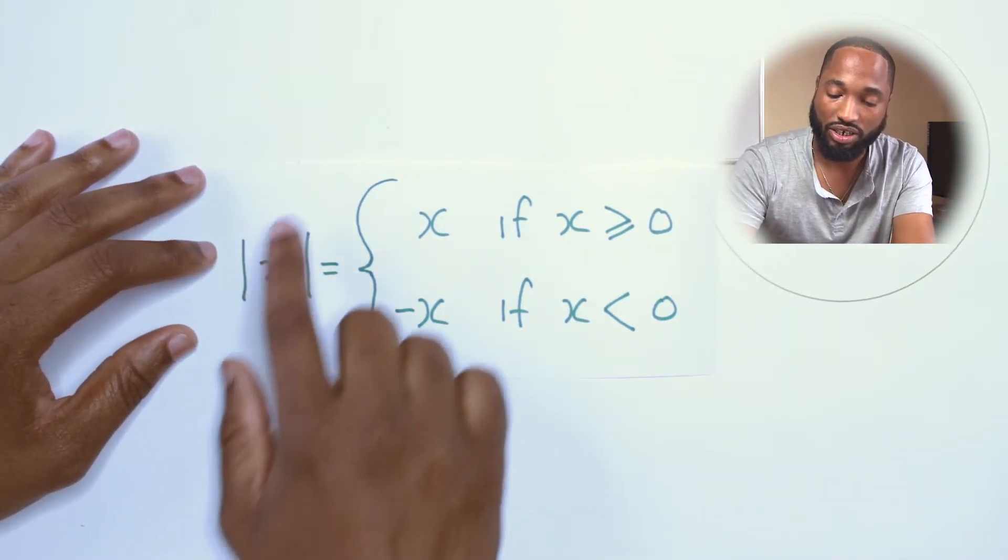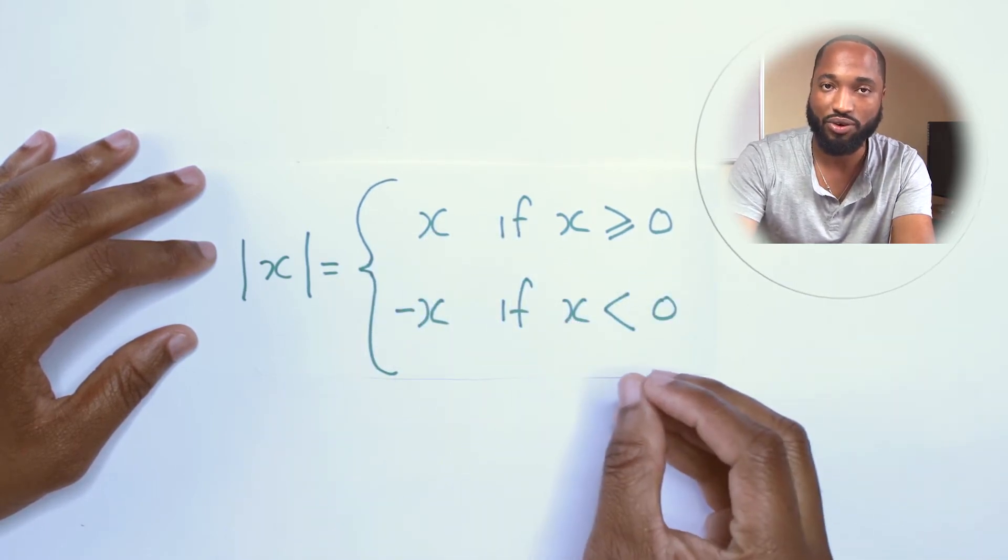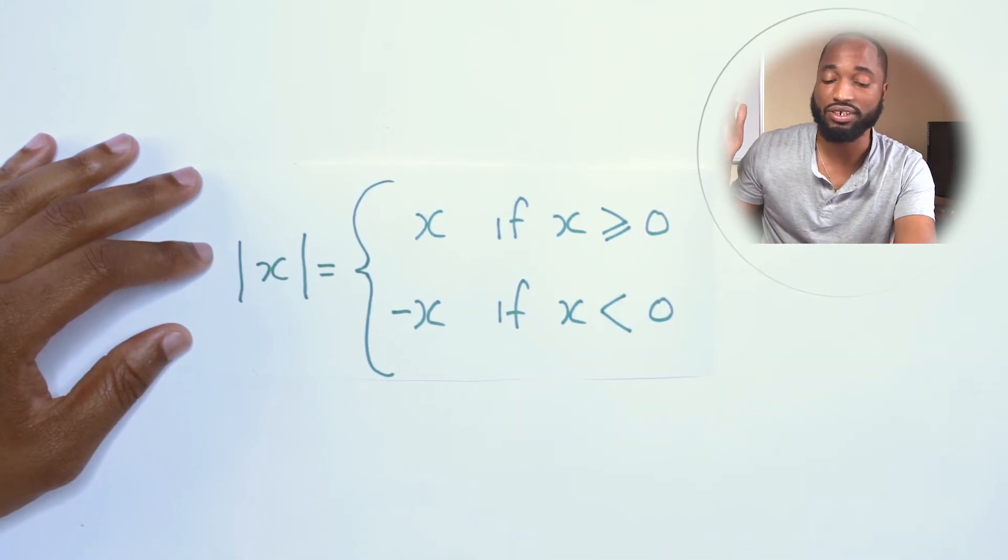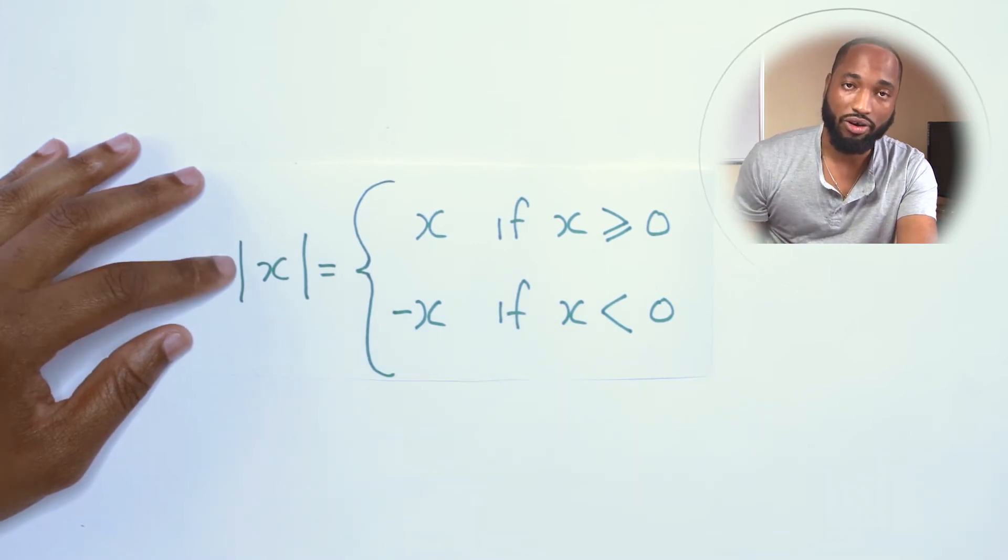Modulus of x is equal to x if x is greater than or equal to 0. So if you have a number like 0, 1, 2, 3, 4, 5, 6, 7, 8, 9, 10, just write back the same number because that's positive already.